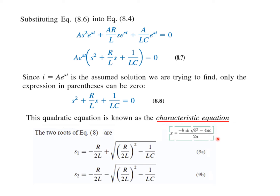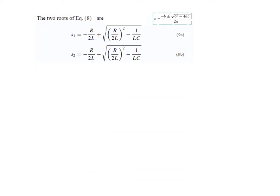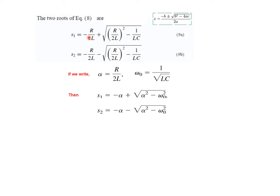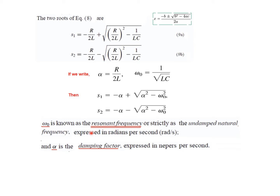The quadratic characteristic equation has roots given by the standard formula, and we can write the two roots S₁ and S₂. To simplify, we define α = R/(2L) as the damping factor and ω₀ = 1/√(LC) as the resonant frequency. Substituting these, S₁ = −α + √(α²−ω₀²) and S₂ = −α − √(α²−ω₀²).